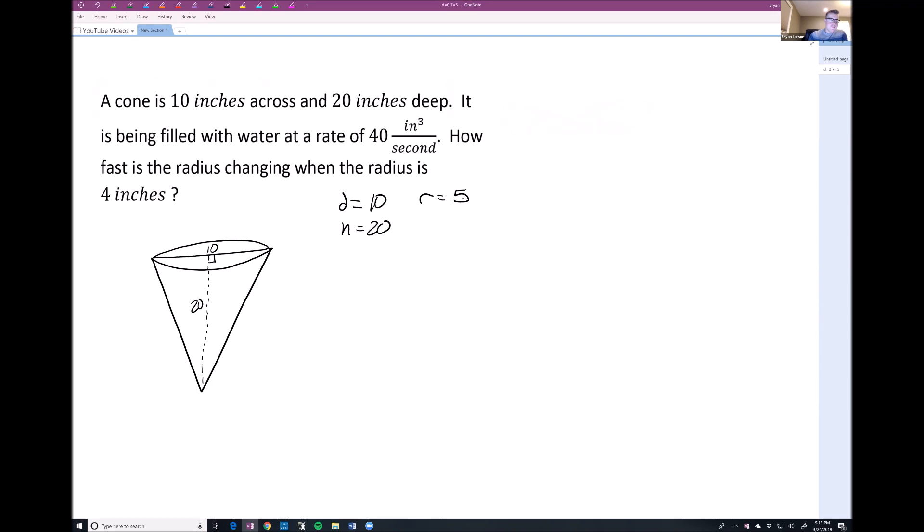Okay, now let's write down what we know here. It's being filled at a rate of 40 cubic inches per second. Okay, well you use cubic inches for volume. So since it's cubic inches per second, that's our dV/dt here. So that's going to be 40 cubic inches per second.